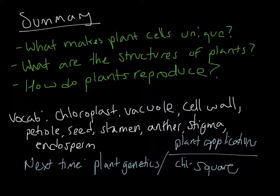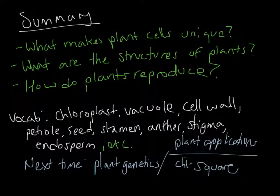To wrap up, you should be able to answer these three big questions: What makes a plant unique? What are the structures of plants? How do plants reproduce, specifically relating to seed development? Key vocabulary to keep in mind includes chloroplast, vacuole, cell wall, petiole, seed, stamen, anther, stigma, and endosperm — among many others. You should also know about the diversity of plant life and what features make plants unique. Next time we'll cover plant genetics, plant applications, and more.